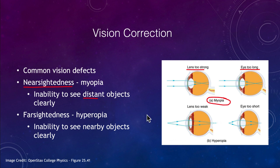If your lens is too weak, or your eye is too short, then you will have what is called hyperopia. That is what we call farsightedness, meaning you cannot see objects that are nearby clearly. So if you have trouble with reading, you have farsightedness — you're not able to see things that are up close.